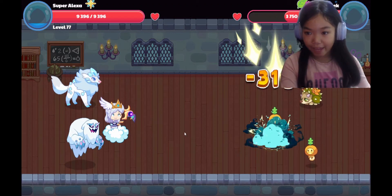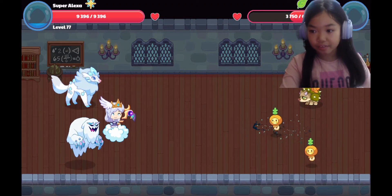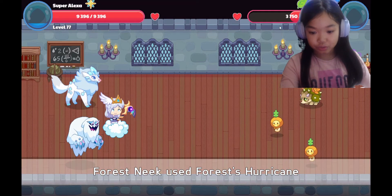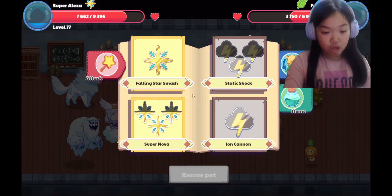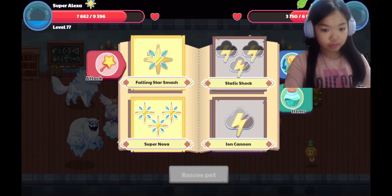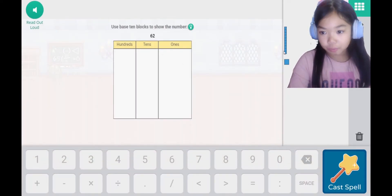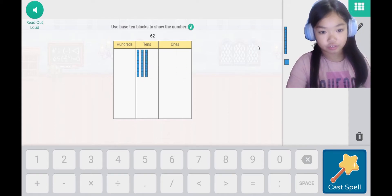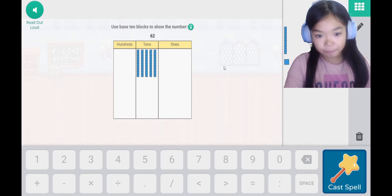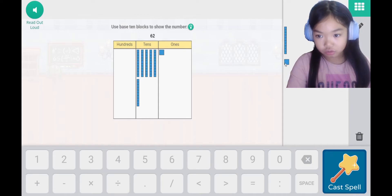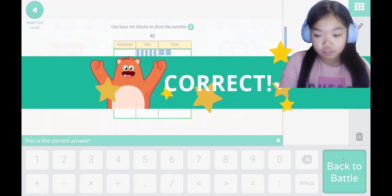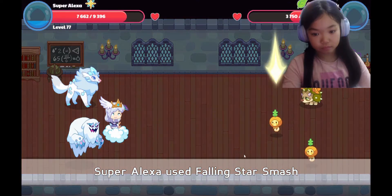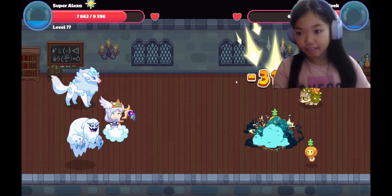Use base 10 blocks to show the number 62. I have 3, 4, 5, 6 tens and 1, 2 ones.